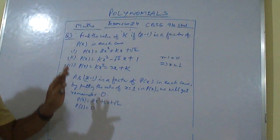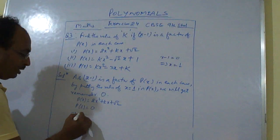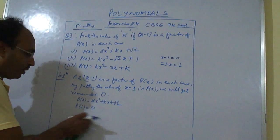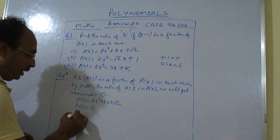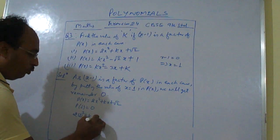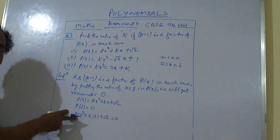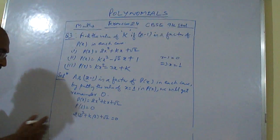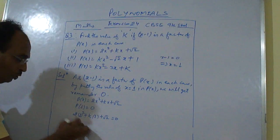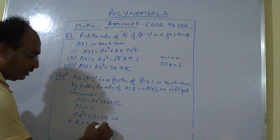Now we need to find the value of k. We will be just equating this. So p(1) is equal to 0. When we write it properly and substitute the value: 2 into 1 square plus k into 1 plus root 2 is equal to 0. So 2 plus k plus root 2 is equal to 0.